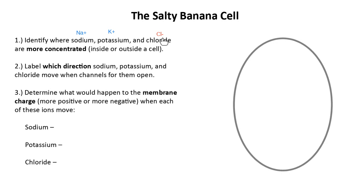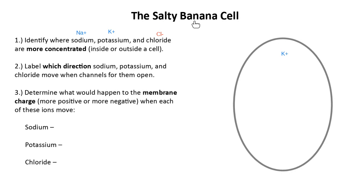We've come up with our abbreviations for each of these things and can see their charges. Now we need to figure out who lives inside and outside this salty banana cell. Which of those ions would I find inside my cell? Potassium lives inside the cell — K+ lives inside the cell.